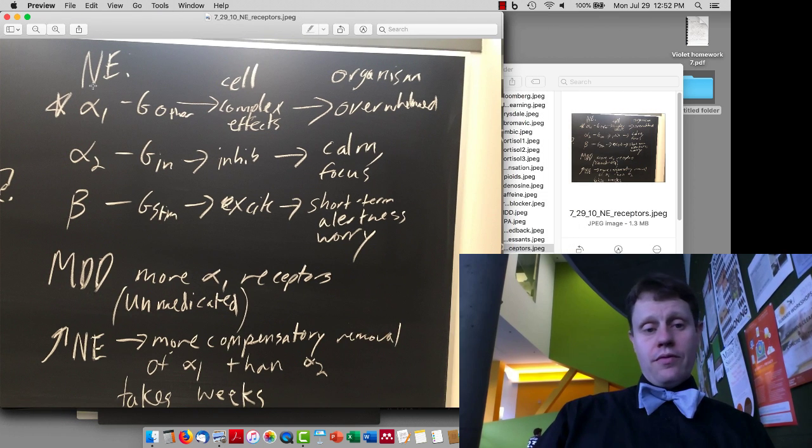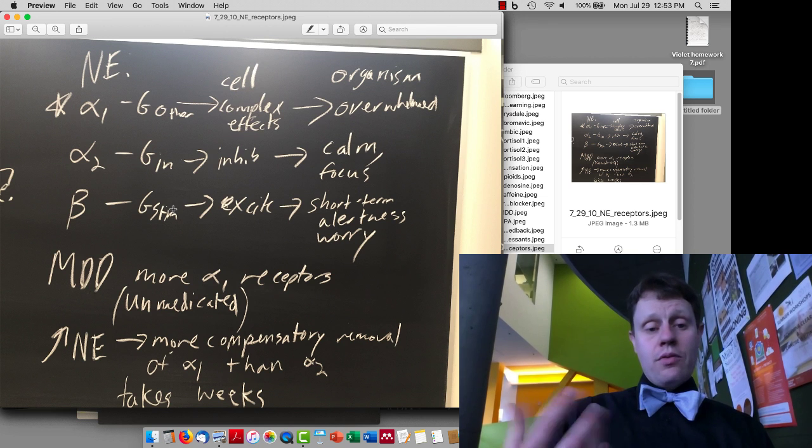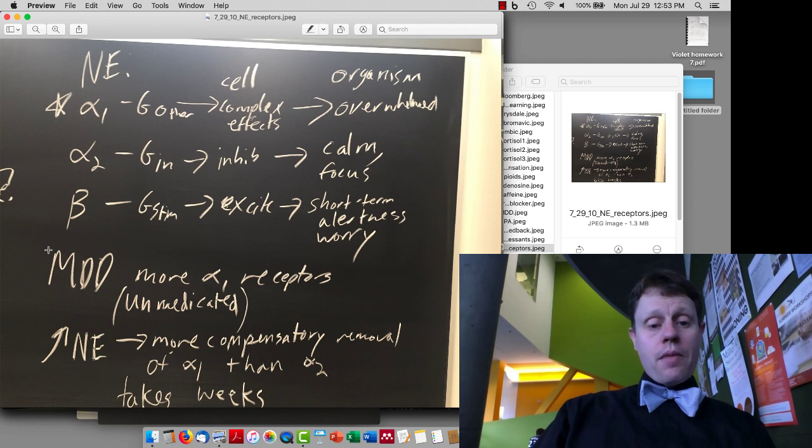So as a reminder, there are three types of norepinephrine receptors. The alpha-1 that are associated with G-other. These have complicated effects in the cell, but for an organism they tend to be feeling overwhelmed. Alpha-2, which tend to help you feel calm and focused and are inhibitory at the cellular level. And then beta, which are excitatory at the cellular level and are more involved in short-term responses rather than chronic stress or feeling overwhelmed. It turns out that people with major depressive disorder have more alpha-1 receptors, at least before they're medicated. And that alpha-1s are just inherently a little bit more efficient at getting removed by these compensatory effects.